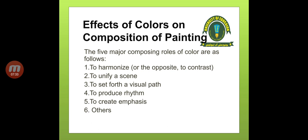In composition, there are 5 major composing roles of colors: first, to harmonize or the opposite, to contrast — color can create harmony or contrast in your painting through the use of two different colors, dark and light. Second, to unify a scene — any color will unify your scene and give it a uniform look. Third, to set forth a visual path — it will create a visual path so that the viewer's eye moves all around the painting. Fourth, to produce rhythm — this creates rhythm and a feeling of continuity. Fifth, to create emphasis — such as indicating a focal point or pushing something into the background.